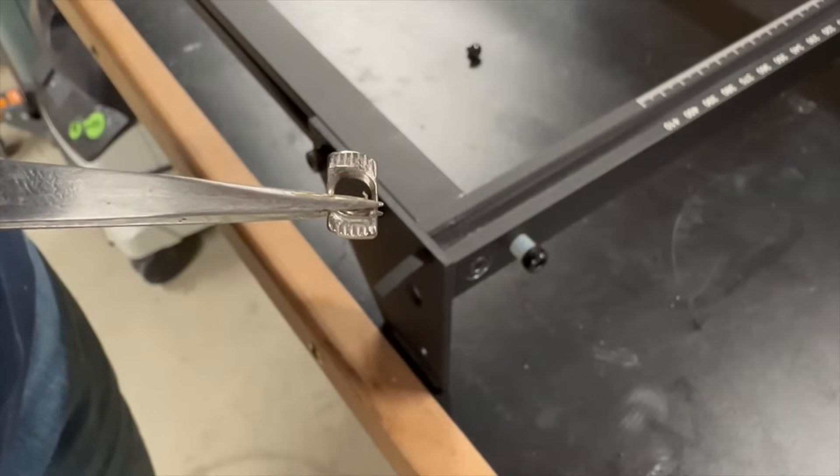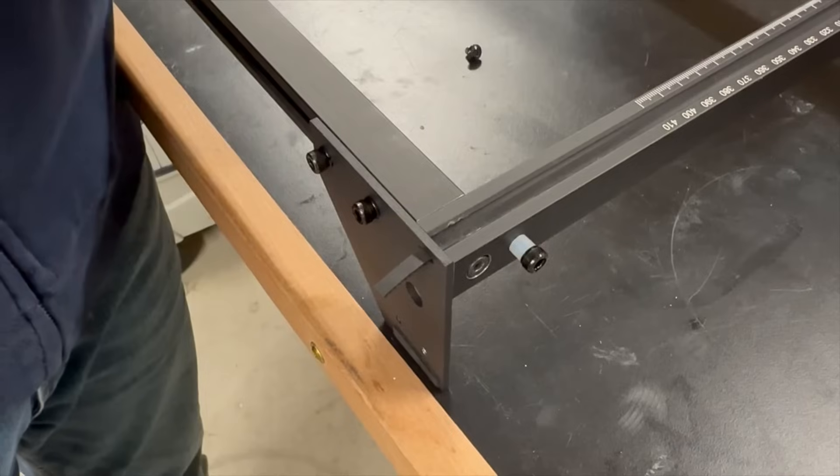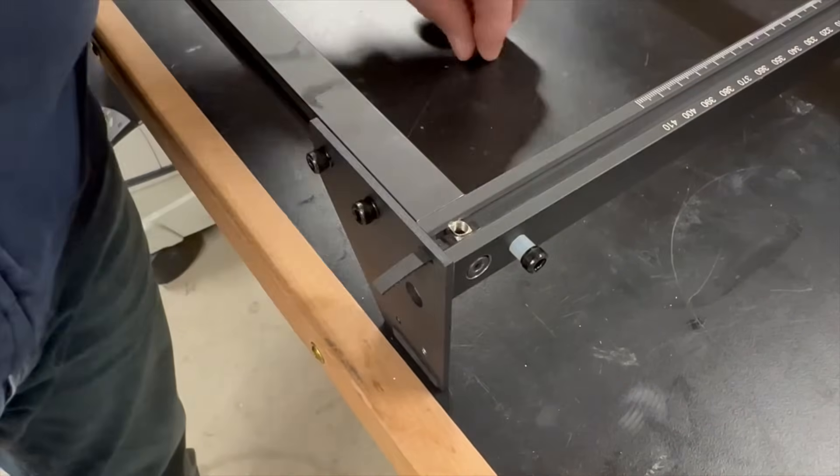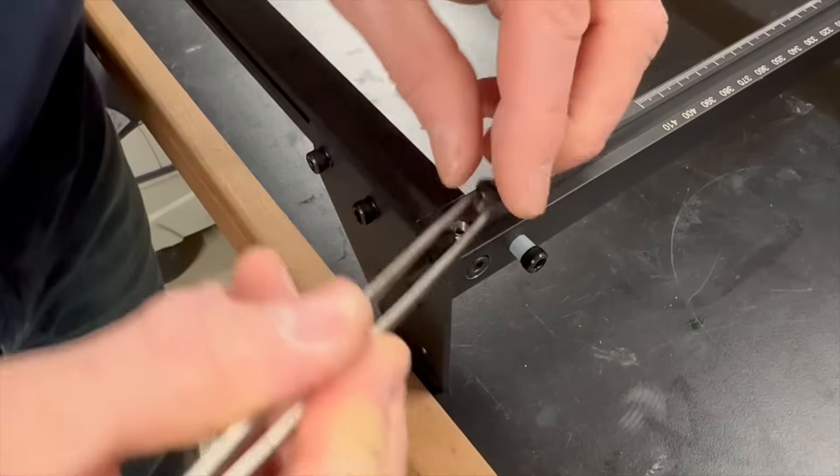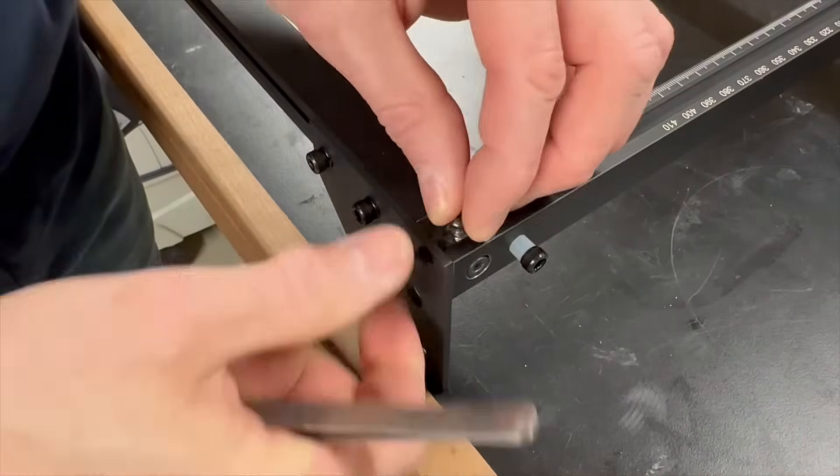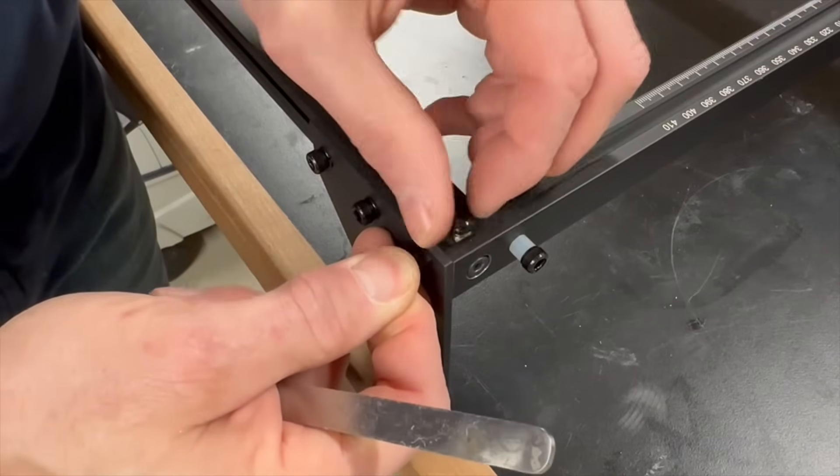The timing belts are then held in place with these little nuts that the instructions refer to as T-shaped screws. You place them on top of the timing belt and turn them 90 degrees clockwise. A screw is then inserted, and when it's tightened down, it will hold the timing belt in place.